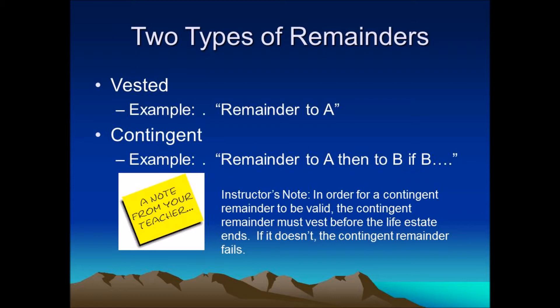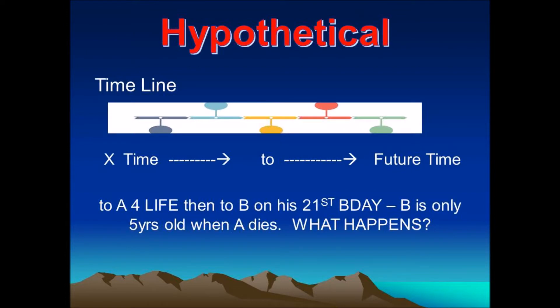When that condition is finally met or the owner has been identified, then the remainder vests. 'To B on his 21st birthday' is an example. The problem with contingent remainders is that we can't have land that is not owned by anybody. So in order to be valid, these contingent remainders must vest before the life estate ends. If a contingent remainder does not vest before the life estate ends, then that contingent remainder fails.